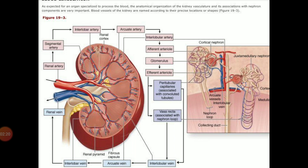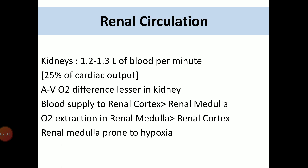This capillary is now finally draining into the interlobular vein, then into the arcuate vein, then the interlobar vein, and finally into the renal vein and back to our circulation. When we are talking about renal circulation, our kidneys receive 1.2 to 1.3 liters of blood per minute.